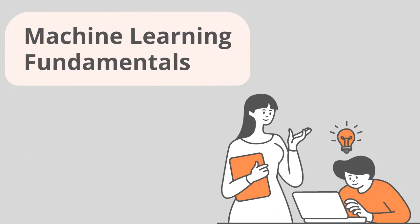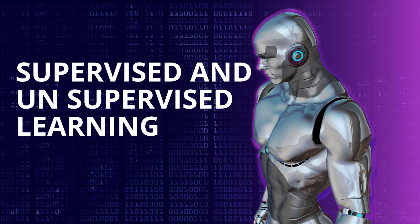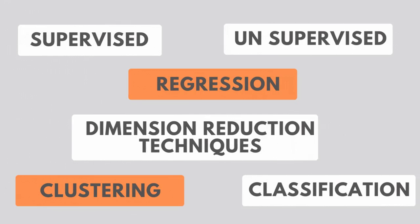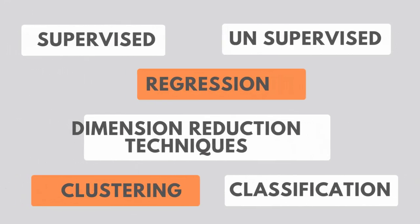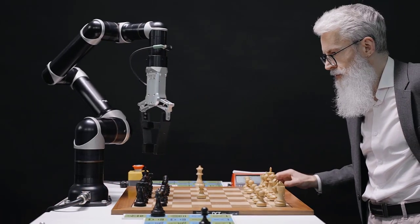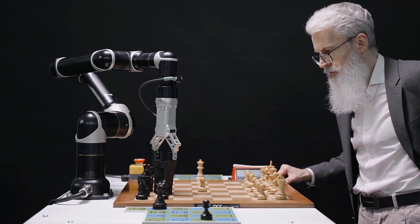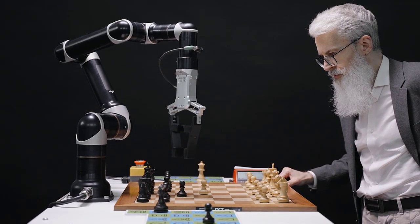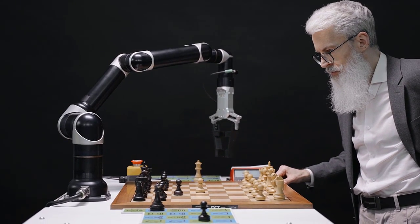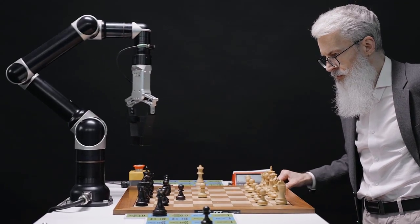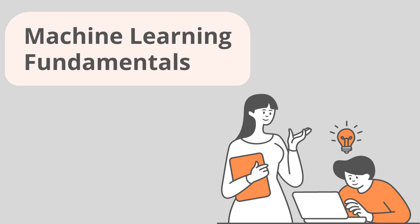The first topic is machine learning fundamentals. You should gain a solid understanding of supervised and unsupervised learning, regression, classification, and clustering. These concepts form the foundation of machine learning and will empower you to build intelligent RPA solutions. Each topic — like regression — is itself a vast concept, so these are starting points or pointers; you have to deep dive into each one.